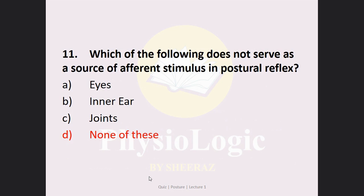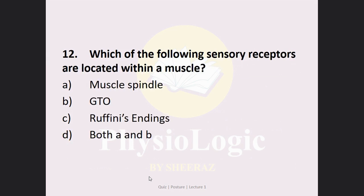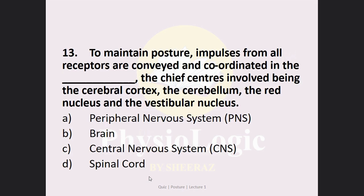MCQ number 12: Which of the following sensory receptors are located within a muscle? Option A: muscle spindle, Option B: Golgi tendon organ (GTO), Option C: Ruffini endings, Option D: both A and B. The correct answer is Option D — both A and B.